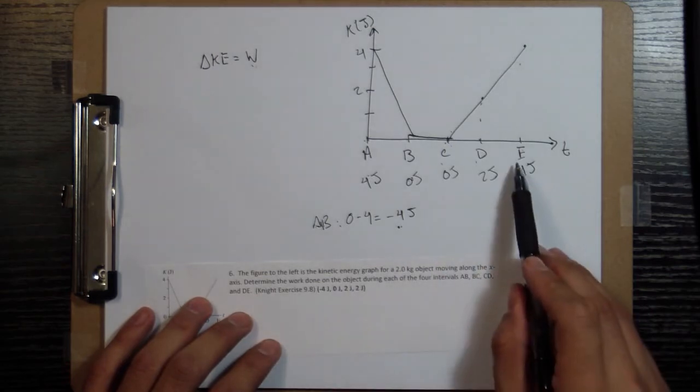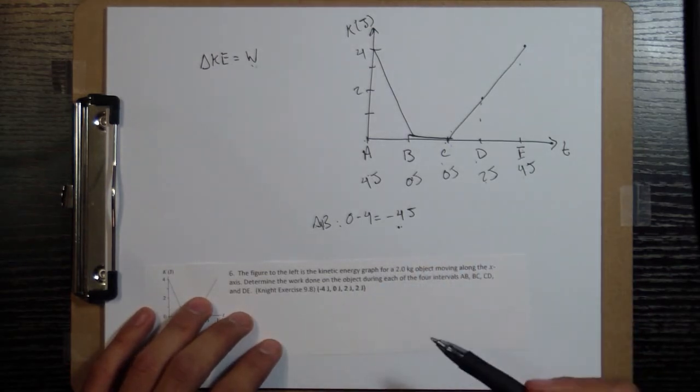And finally, D, E, four minus two, gives you two. Done.